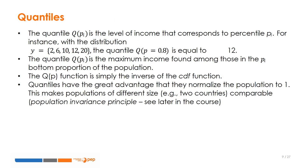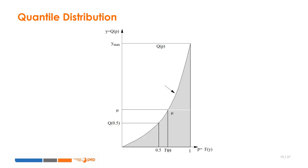We now introduce a new concept, which is strictly related to the previous concepts: the concept of the quantile. The quantile function is simply the inverse of the cumulative distribution function. On the vertical axis, we have the quantile function, and on the horizontal axis, we have the percentile, or cumulative density, varying between 0 and 1. The area under the quantile function is equal to the average income.